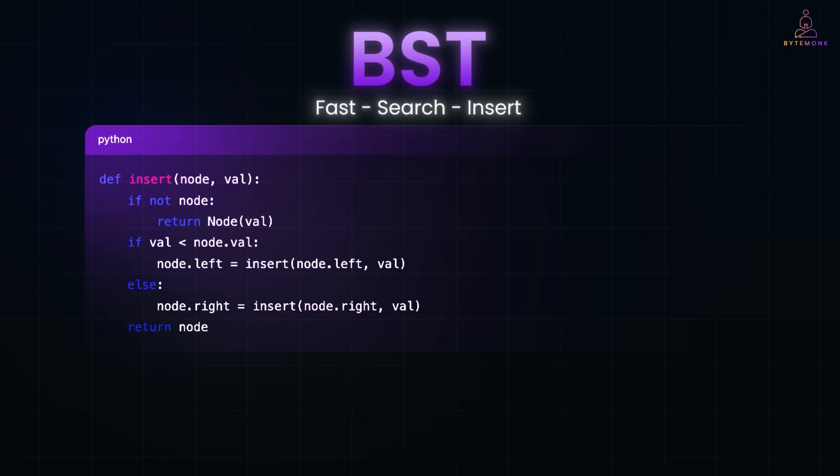Binary search trees give us fast search and insert, as long as the tree stays balanced, meaning the values are spread evenly on both sides. But this brings us to a bigger question. How are trees actually used in the real world? Not just in theory, but in systems we rely on every day.